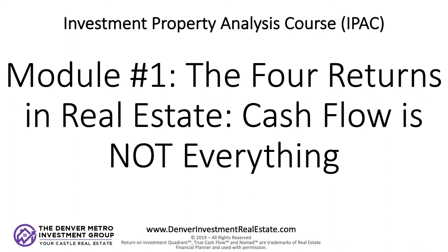Before we use the return on investment quadrant to look at all four ways, let me touch on three common metrics. Your cash-on-cash return is 8.2%. Your cap rate is 7%. And your gross rent multiplier or GRM is 103. These are first-year returns. I want to share those with people familiar with those metrics so they have a baseline for comparison.